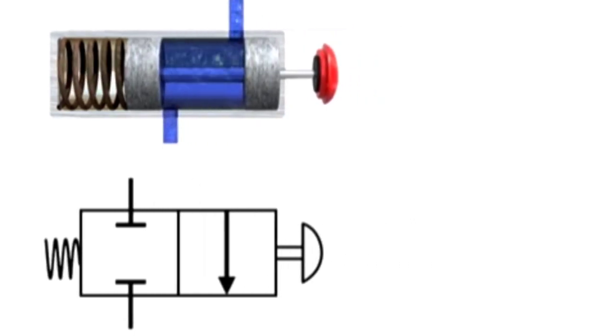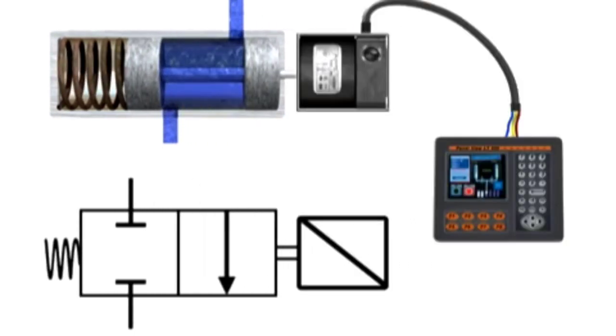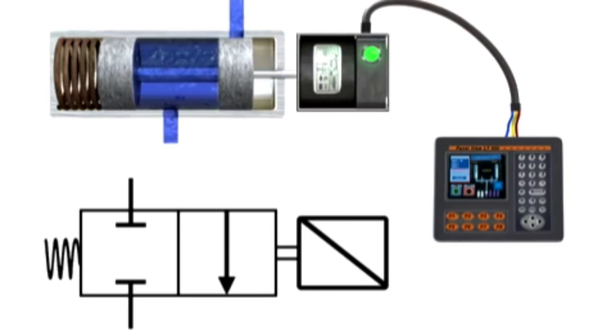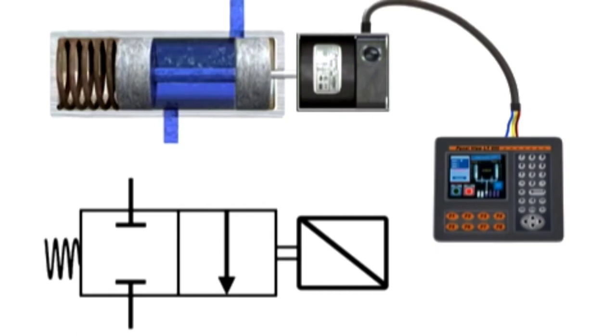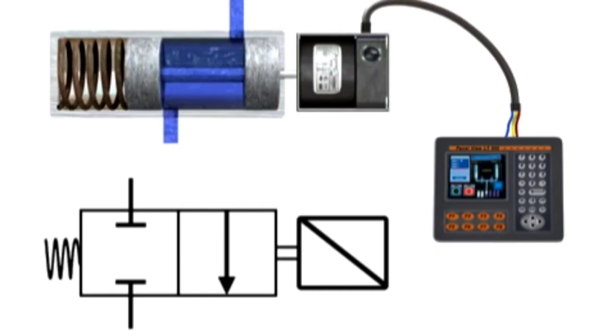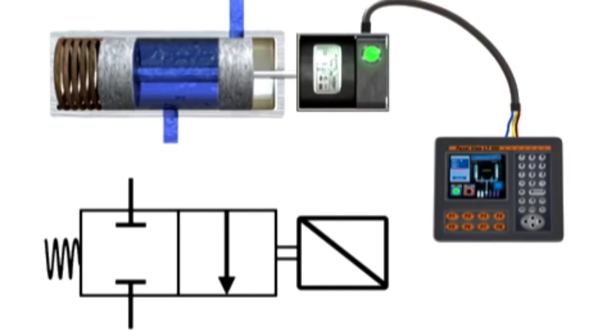By contrast, valves with a solenoid actuator respond to an electrical signal for shifting. With electrical control, machine cycles can be set up for automatic sequencing, and operator control can be exercised from a remote location.